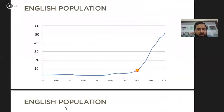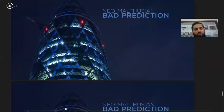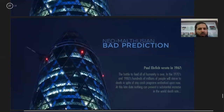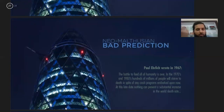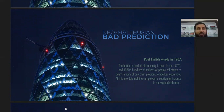According to Malthus this catastrophe would have occurred but it didn't. Still, there are followers of Malthus — we call them Neo-Malthusians. Paul Ehrlich is one very famous Neo-Malthusian scientist who wrote a book in 1968 called 'The Population Bomb.'